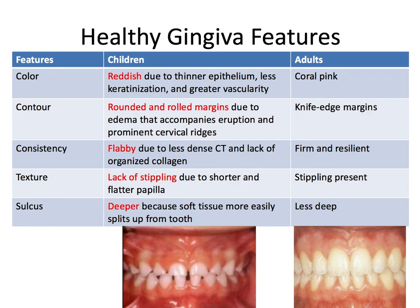So let's start by talking about color. In children, the gingiva tends to be reddish due to thinner epithelium, less keratinization, and a greater overall vascularity. Whereas in adults, the gingiva, especially the attached gingiva, is a coral pink color.